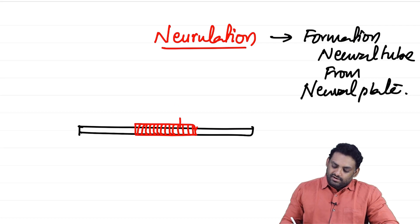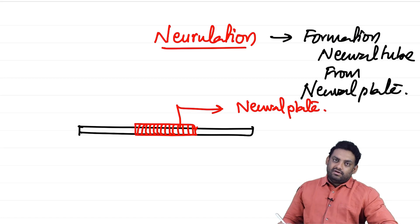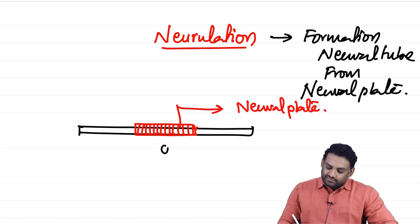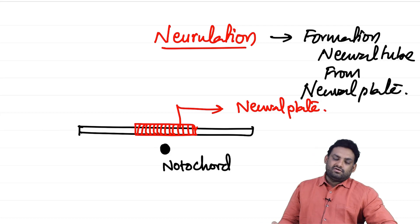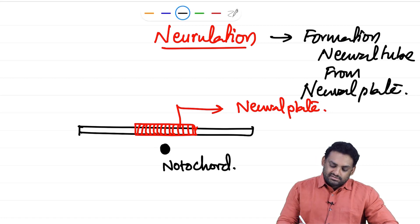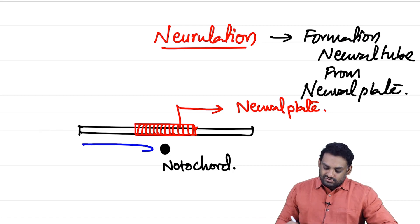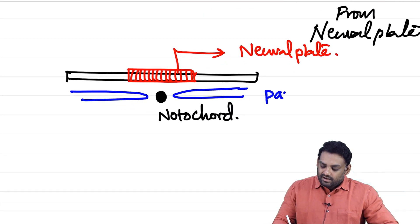Just below the ectoderm you have mesoderm, and exactly in the center of the mesoderm you have a structure called the notochord. Because it is present in the center, you can also call it the axis or axial mesoderm. Whatever is on either side of the notochord can be called paraxial mesoderm.